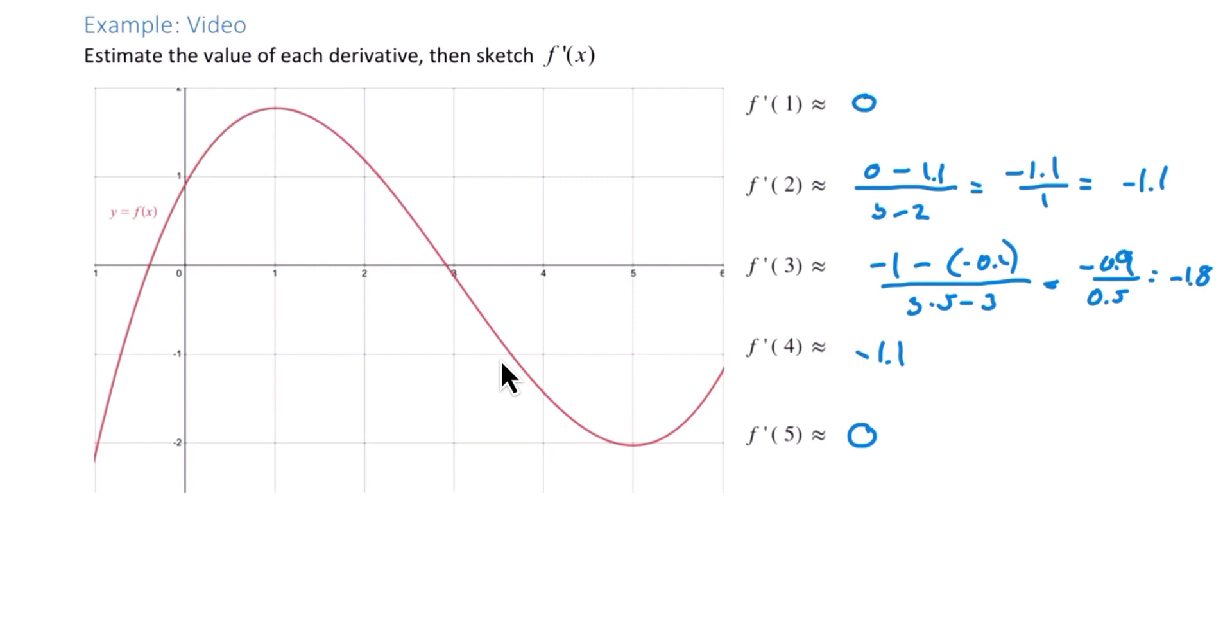But let's use these to now sketch f'(x). So when x is 1, y is 0. When x is 2, y is roughly negative 1.1. When x is 3, roughly negative 1.8. And then at 4, negative 1.1. And at 5, we get 0.